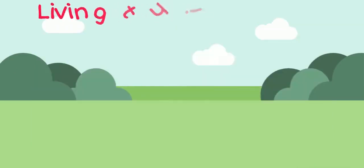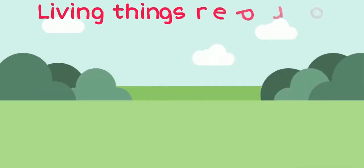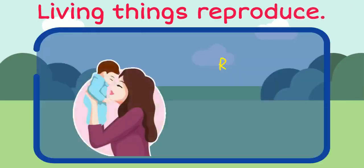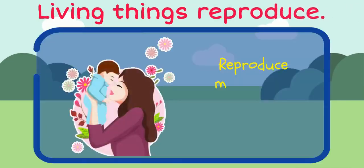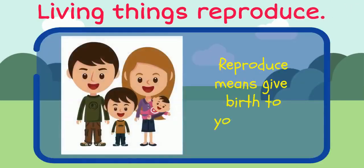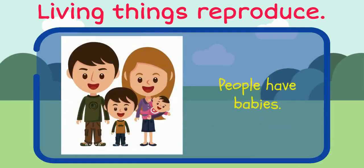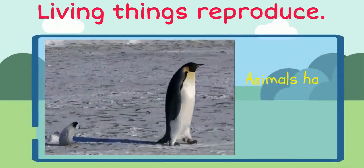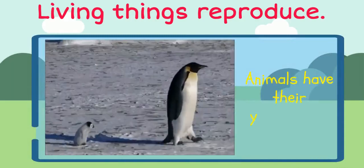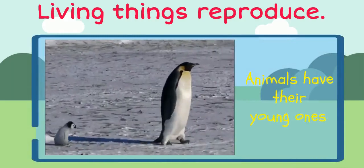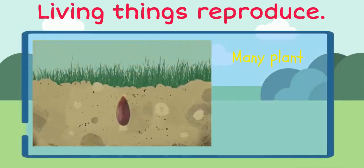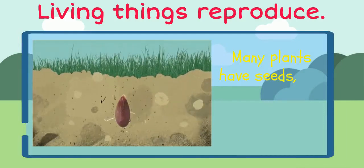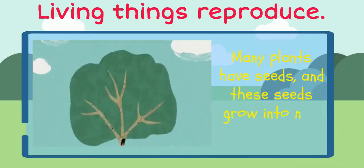Living things reproduce. Reproduce means to give birth to young ones. For example, people have babies, animals have young ones, and many plants have seeds — and these seeds grow into new plants.